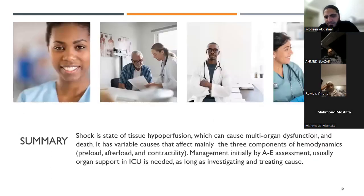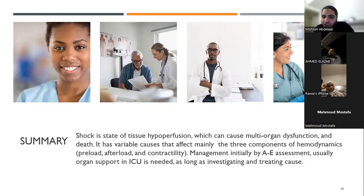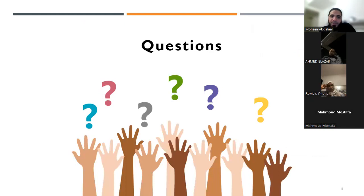To summarize: shock is a state of tissue hypoperfusion that causes multi-organ dysfunction and death if untreated. It can be multifactorial, affecting the three main hemodynamic components — preload, afterload, and contractility. Management starts with A to E assessment in a systematic way, treating abnormalities as found. The patient will usually need organ support in the ICU while investigating and treating the cause.